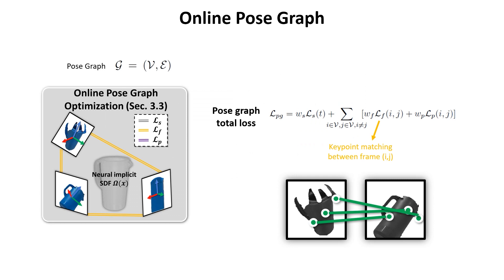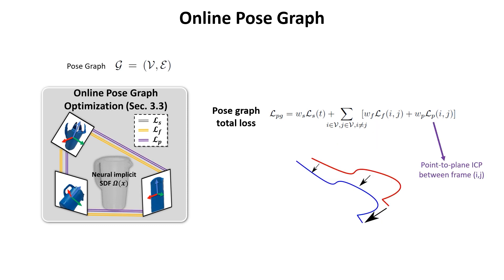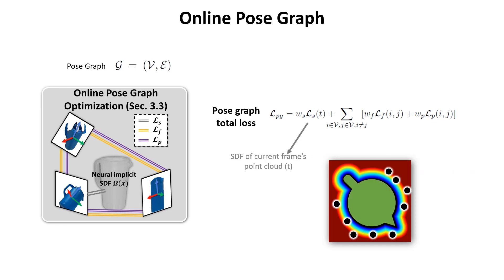The online pose graph represents the historical frames as nodes. The edges are connected by three types of losses, including the feature match loss, the point-to-plane ICP loss, and the SDF loss of the current frame's point cloud, while looking up the neural signed distance field.